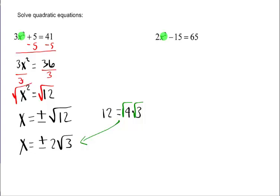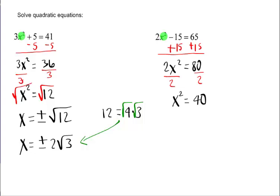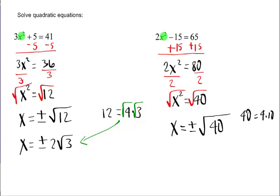On the second problem, we want x² all by itself, so add 15 to both sides, then divide everything by 2. Then take the square root of both sides, and you get x equals plus or minus the square root of 40. But 40 reduces — it equals 4 times 10 — so taking the square root of both gives you plus or minus 2 square roots of 10.